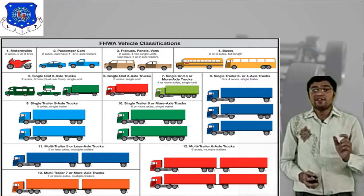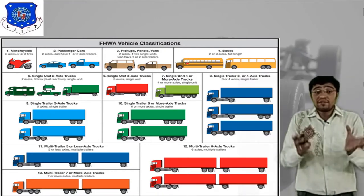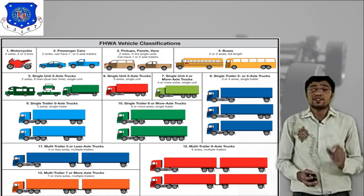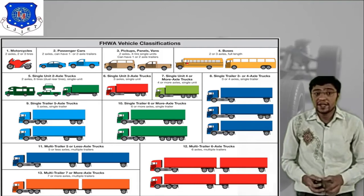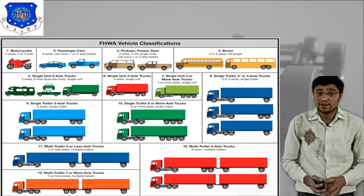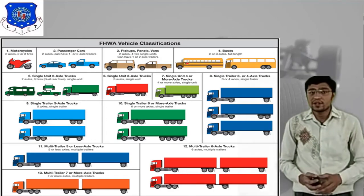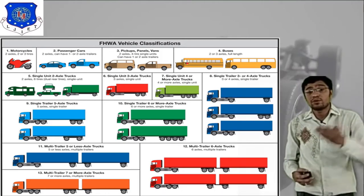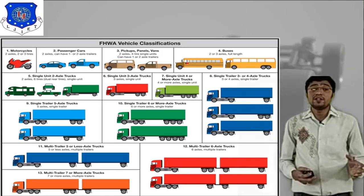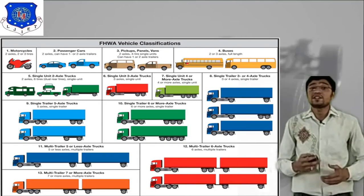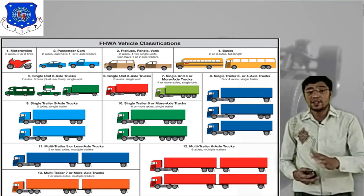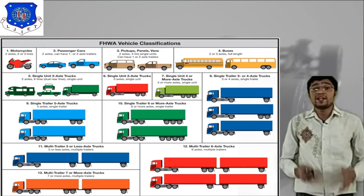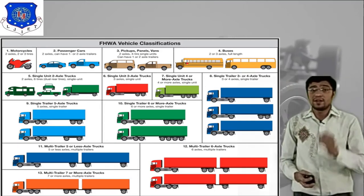This is the FHWA — Federal Highway Administration — vehicle classification, a brief overall classification. As you can see: class 1 is motorcycle, class 2 is passenger car, class 3 is pickup panel van, class 4 is bus, and classes 5 through 12 cover different types of trucks — single unit 2 axle, 3 axle, 4 axle, 5 axle, 6 axle, and multi-trailer with different axle configurations.